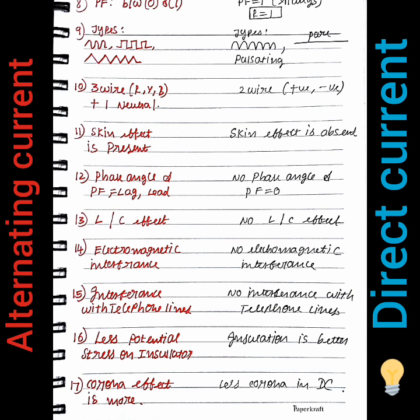DC current can be pulsating or pure. For AC transmission, we use a three-wire system: R, Y, B phases plus one neutral — that is a three-wire four-wire system. For DC, a two-wire system with positive and negative is used, so the cost is less.